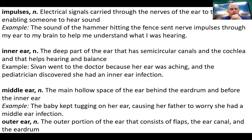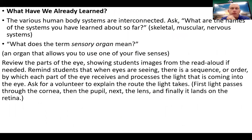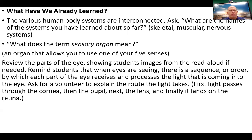We're going to talk about the inner ear, middle ear, and outer ear today. Again, the human body systems you talked about in this unit include the digestive, excretory, respiratory, skeletal, muscular, and nervous systems, all covered in previous lessons. Now, what have we already learned? It's important to know what we've learned so we know where we're going. All the human body systems are interconnected. The term sensory organ involves organs that are directly linked to one of your five senses.